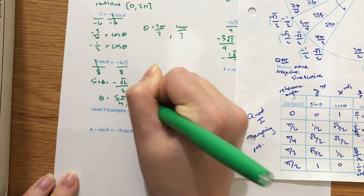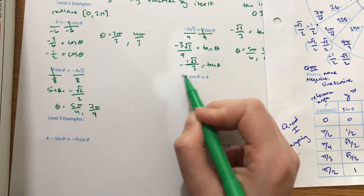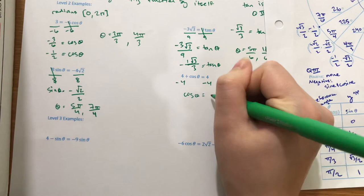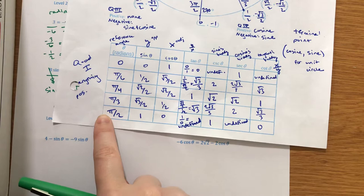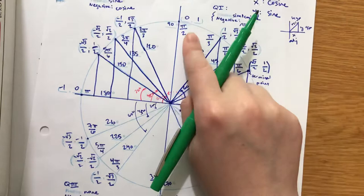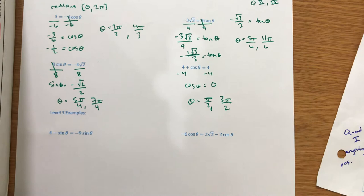Last Level 2 example: 4 plus cosine theta equals 4. To get cosine by itself, subtract 4 from both sides, so cosine theta equals 0. When is cosine 0? Go to your table — cosine is 0 at pi over 2 values. Cosine is 0 at pi over 2 and at 3 pi over 2. So theta equals pi over 2 and 3 pi over 2. Don't forget the 3 pi over 2.